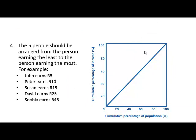The five people in our economy should be arranged from the person earning the least to the person earning the most. We have John earning 5 grand, Peter earning 10 grand, Susan earning 15 grand, David earning 25 grand, and Sophia earning the most at 45 grand. If we add this together, it's 100 grand.